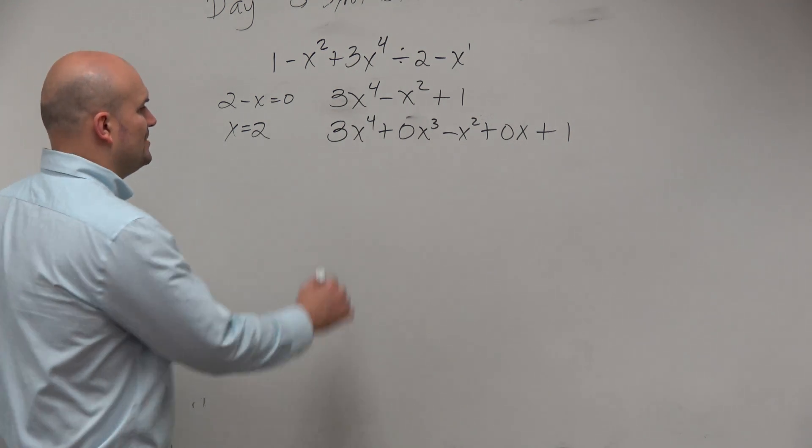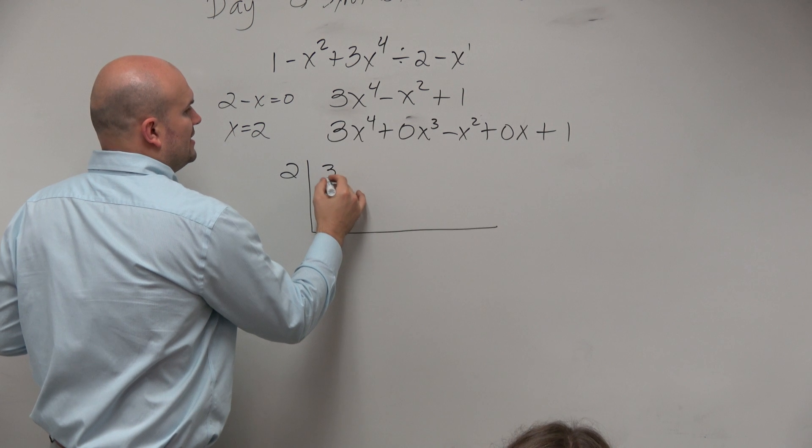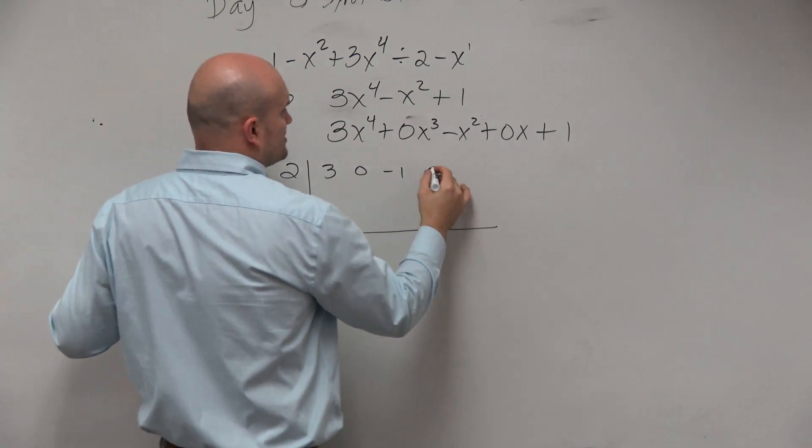So now when we go from here, we can set it up. 3, 0, negative 1, 0, and 1, all right?